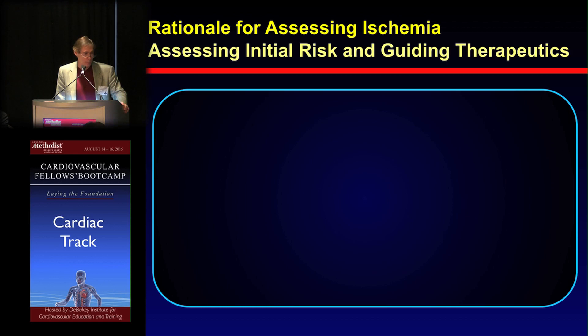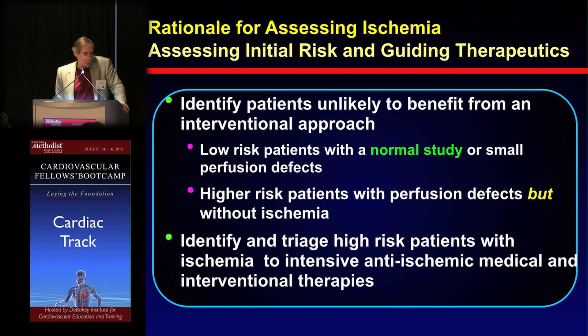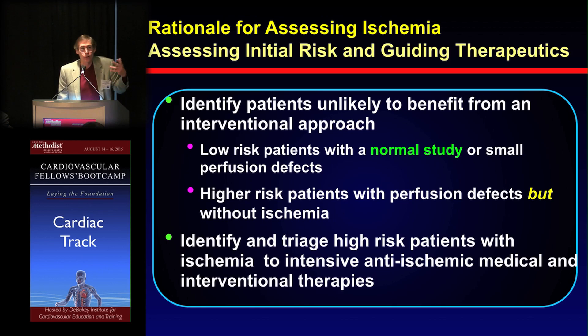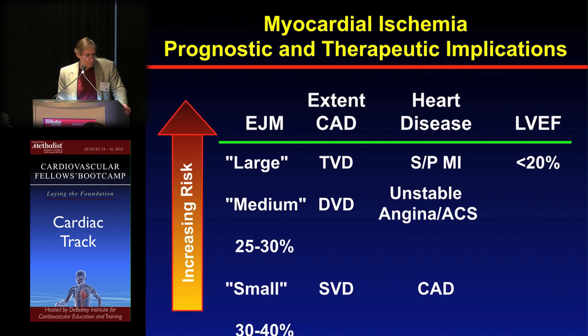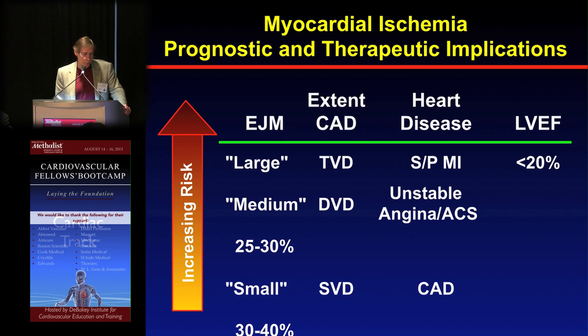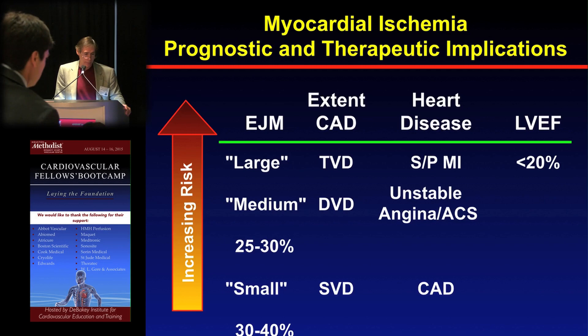When thinking about the rationale for assessing ischemia, we try to identify patients unlikely to benefit from an interventional approach — those would be low-risk patients with a normal study or small perfusion defects, and also higher-risk patients with perfusion defects but no myocardial ischemia, where interventions would not improve outcomes. We also aim to identify high-risk patients where intensive medical therapy or interventional procedures would be warranted. Risk increases with the extent of jeopardized ischemic myocardium, the extent of coronary artery disease, worsening clinical scenarios, and as ejection fraction drops.